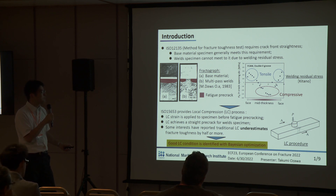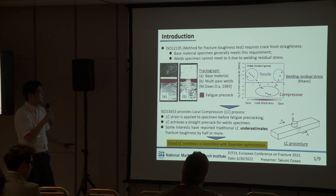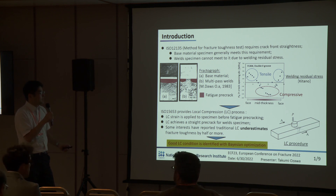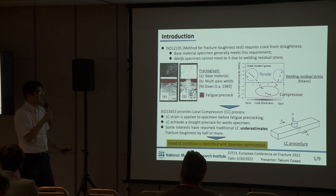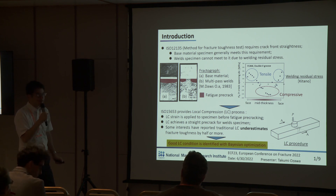On the other hand, that of the multi-pass weld is bowing. This figure shows the residual stress distribution of the weld specimen. The horizontal axis is the thickness position and the vertical axis is the residual stress in the crack opening direction. The residual stress at the surface is tensile and that at mid-thickness is compressive.